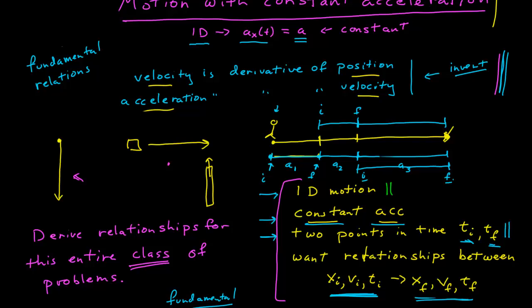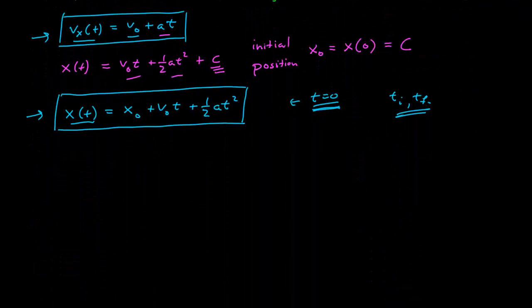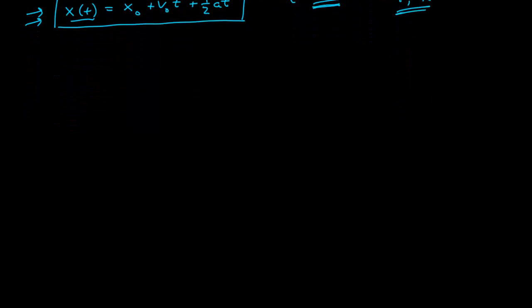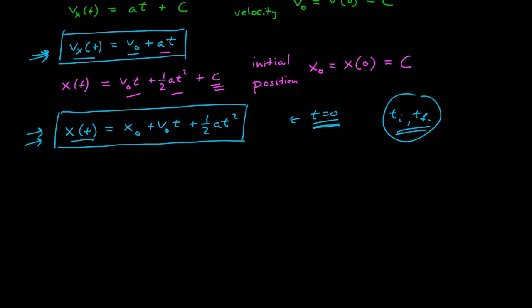What we had from our last module is these expressions that give us the general functions from t equals zero, and now we want to extend on that, assuming we have two initial and final points in time.